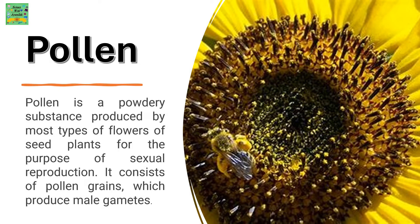Pollen is a powdery substance produced by most types of flowers of seed plants for the purpose of sexual reproduction. It consists of pollen grains which produce male gametes.